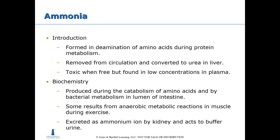Ammonia is formed in the deamination of amino acids during protein metabolism. It is removed from circulation and converted to urea in the liver. Although toxic when free, it is found in low concentrations in plasma. Ammonia is produced during the metabolism of amino acids, by bacterial metabolism in the lumen of the intestine, and from anaerobic metabolic reactions in muscle during exercise. It is excreted as ammonium ion by the kidney, where it acts to buffer the urine.